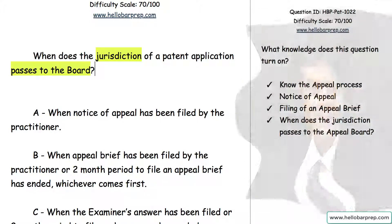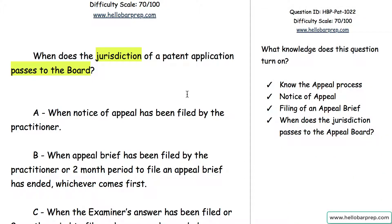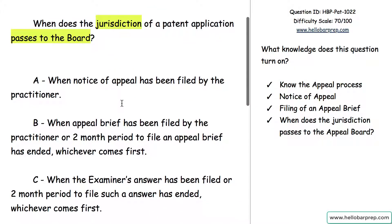Knowledge of the following is required before you can successfully answer this question. You've got to know the appeal process — how does it work, when does it begin, what phases are there, and when does jurisdiction eventually pass from examiner to the patent appeals board? What is the notice of appeal? What is filing of an appeal brief? When does the jurisdiction pass? These are the four items you need to know.